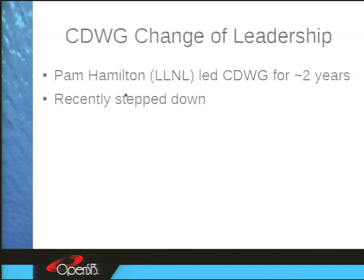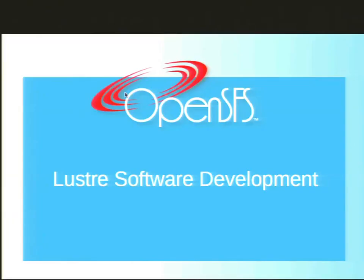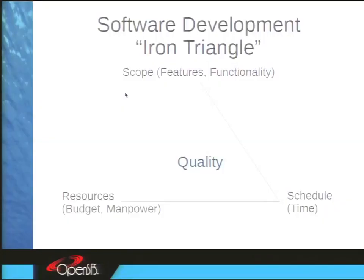If you've read anything about software development, you've probably seen a triangle like this. You always have the problem of balancing different requirements: the scope, the amount of time you have, and the resources — money and manpower. If these things aren't in balance, you're not going to have a quality software release. Just look at the number of failed software projects out there.